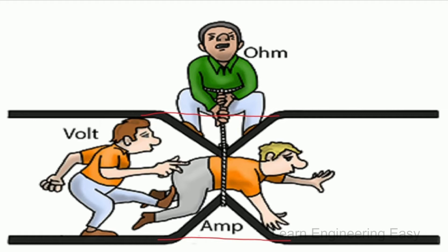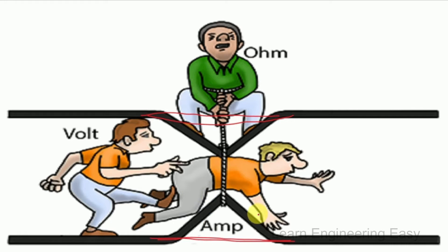We assume this is a conductor. We have three persons here to represent the components. This is Ohm — the resistance unit. This is Volt — representing the voltage. This is Ampere — the current unit, representing the current. So the voltage drives the current, which means in a conductor, current flows due to the voltage.